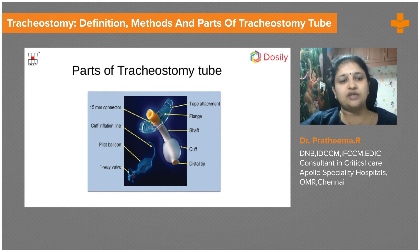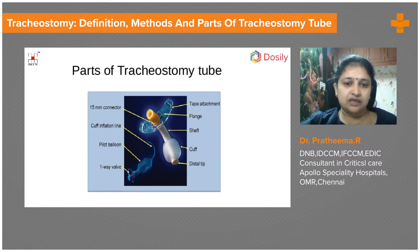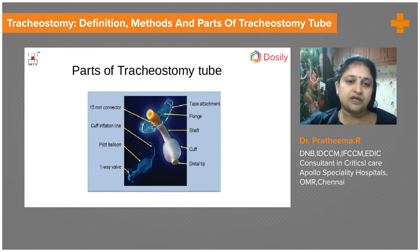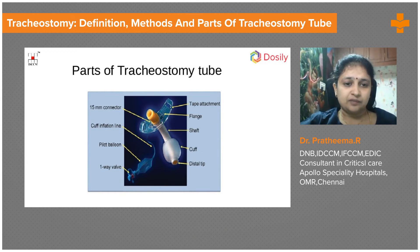The parts of the tracheostomy tube are important to know as we will use these terms repeatedly. There is a distal tip, which goes inside the patient's trachea, and a proximal tip. The cuff makes the tube snugly fitting in the trachea. There is a shaft and a flange — the flange is what we see outside. There is also a 15-millimeter connector, which is a fixed size in all adult and pediatric tubes. The cuff is inflated using a pilot balloon with a one-way valve, and there is a locker that prevents air from escaping from the valve.